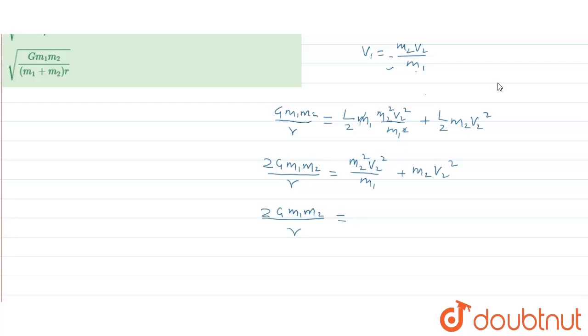We will take m2 v2 square common, then this will be equal to m2 upon m1 plus 1. And here m2 and m2 will get cancelled.